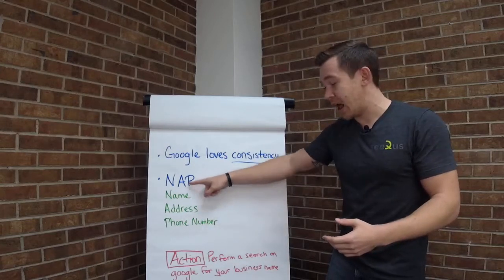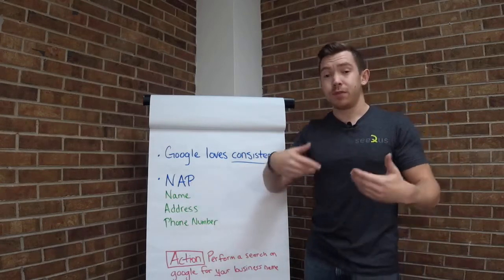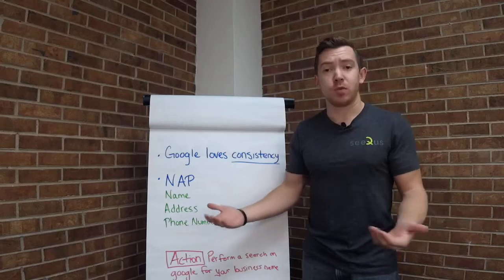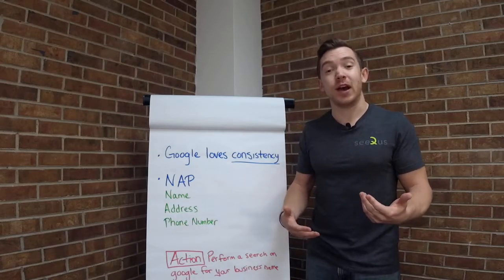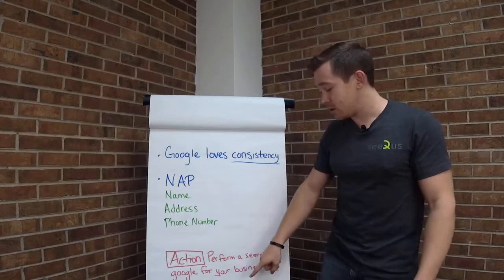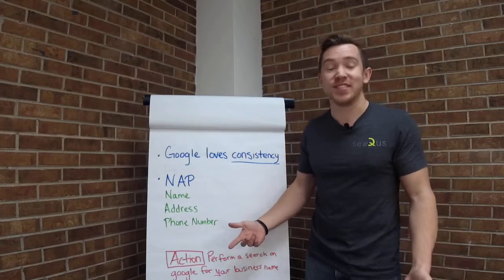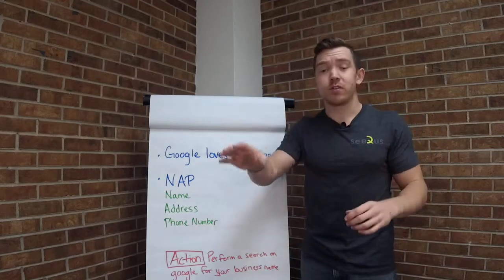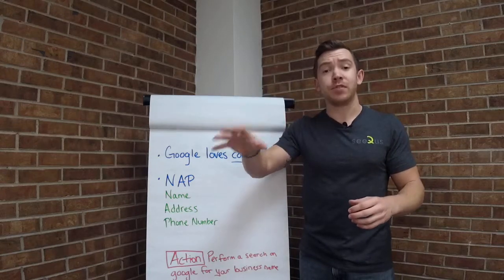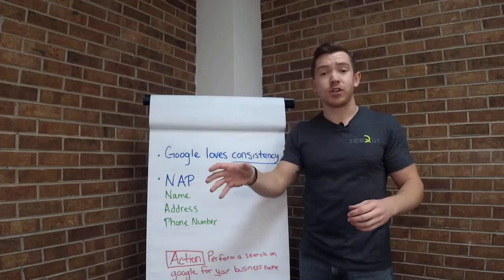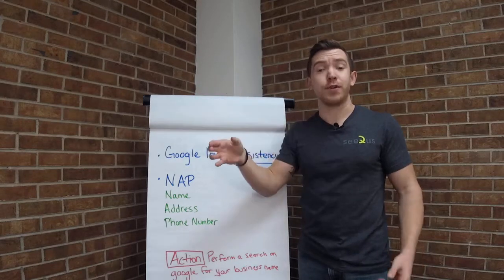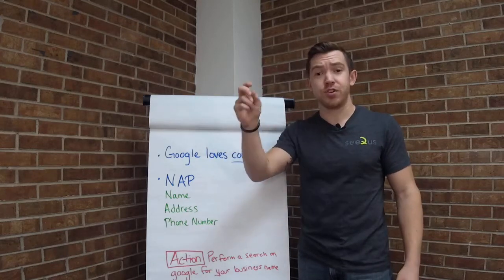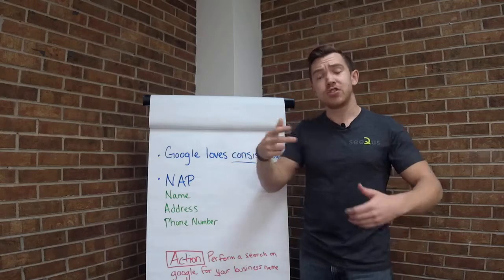If you're wondering if you have multiple or duplicate listings out there, there's an easy way to figure it out. Quick action for you: Google your business name and put it in the search bar. Look for what pops up - is the knowledge card on the right side the correct knowledge card for your business that shows your images, your name, your address? Make sure that's consistent.